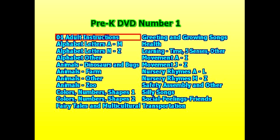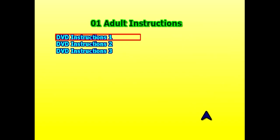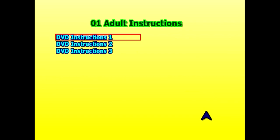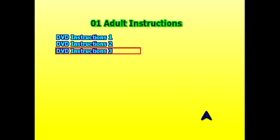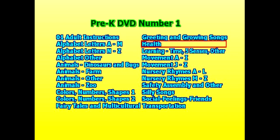If you listen to Adult Instructions again, on those three folders, once DVD Instructions 1 is finished, DVD Instructions 2 will start to play, and then DVD Instructions 3, because it is a continuous play DVD. So we click on our menu button and go back to the menu screen.